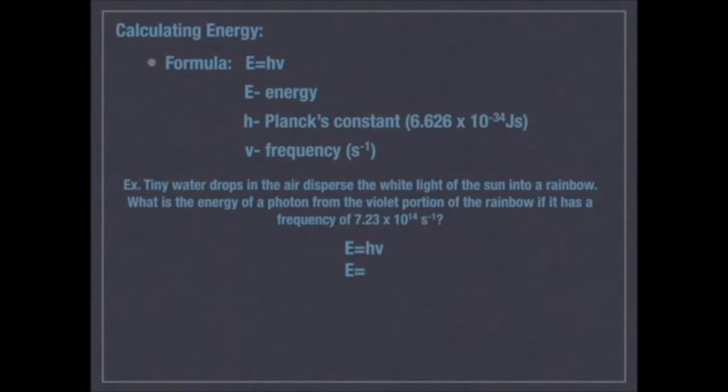I know Planck's constant; it's 6.626 times 10 to the negative 34 joules times seconds, and I know my frequency, which is 7.23 times 10 to the 14th seconds to the negative one. When I multiply those out, what I get for the energy is 4.79, because I rounded based on three significant figures, times 10 to the negative 19 joules.